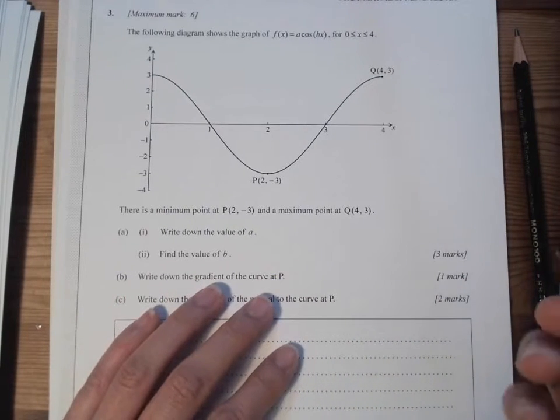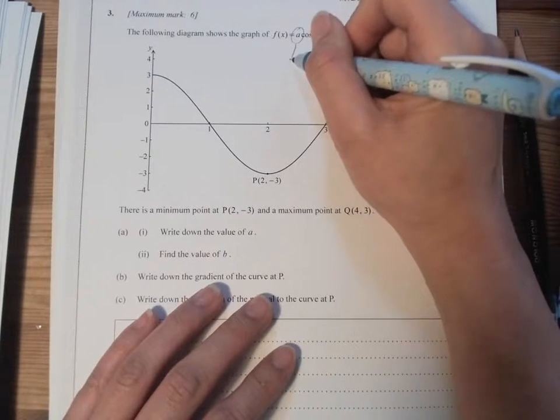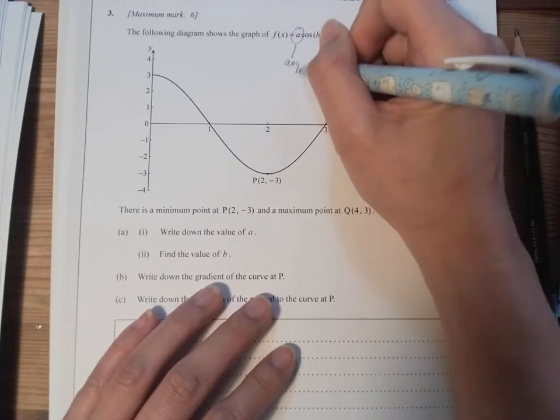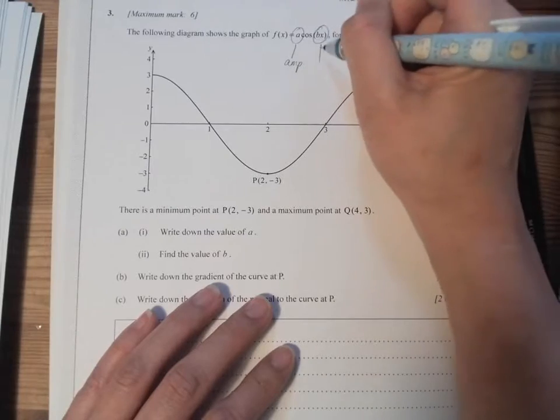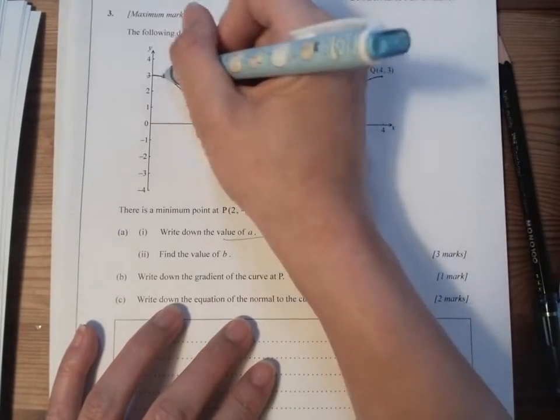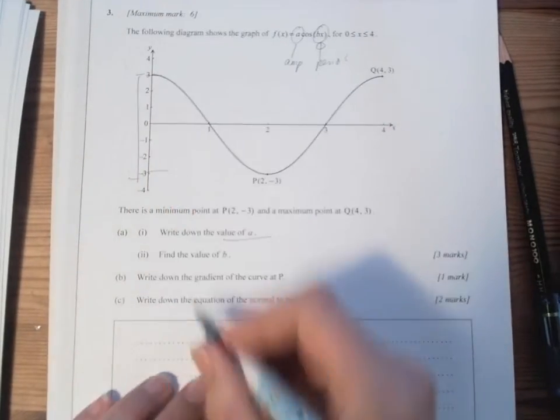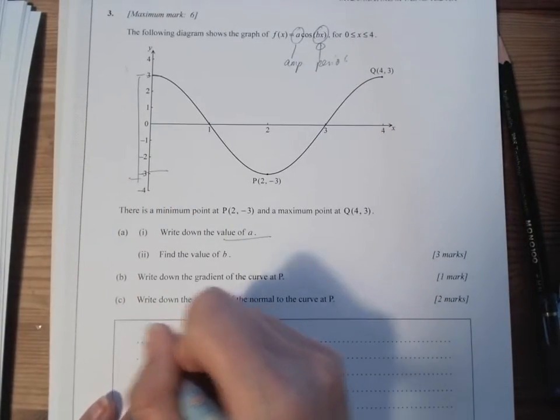All right, this is a trigonometric function. Remember the coefficient here is related to the amplitude, and this is related to the period. So first of all, write down 'a'. Because this is max 3 and negative 3, in the middle of it, so a equals to 3. Nice and easy.